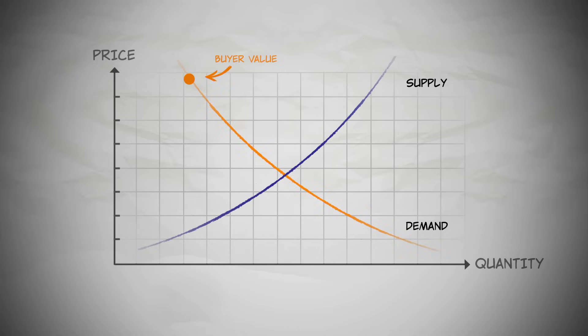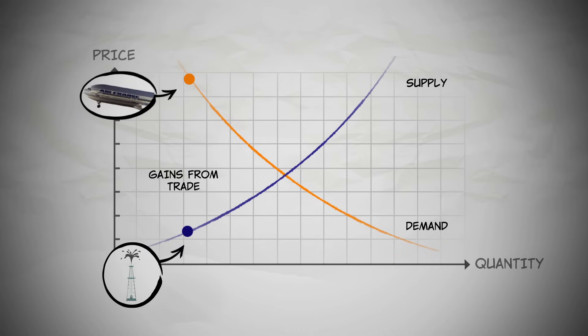Since the buyers with the highest values buy and the sellers with the lowest costs sell, the gain from trade, the difference between the value a good creates and its cost, is maximized. In addition, at the equilibrium quantity, every trade that can generate value does generate value, up until the very last trade where the value to buyers is just equal to the cost to sellers. In a free market, there are no unexploited gains from trade, and there are no wasteful trades.